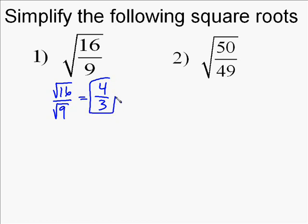So the square root of 16 is 4 and the square root of 9 is 3, so the answer is 4 thirds. The square root of 16 ninths is 4 thirds, and it makes sense because 4 thirds times 4 thirds is 16 over 9.